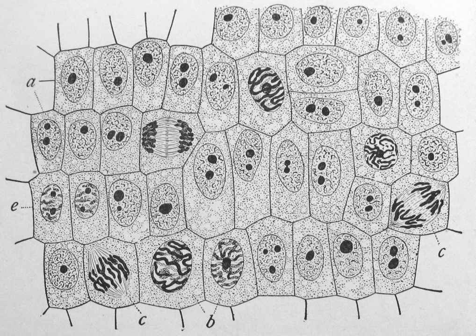Most plant and animal cells are visible only under a microscope, with dimensions between 1 and 100 micrometers. Cells were discovered by Robert Hooke in 1665, who named them for their resemblance to cells inhabited by Christian monks in a monastery.